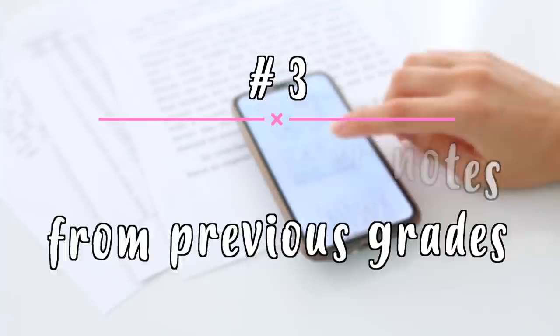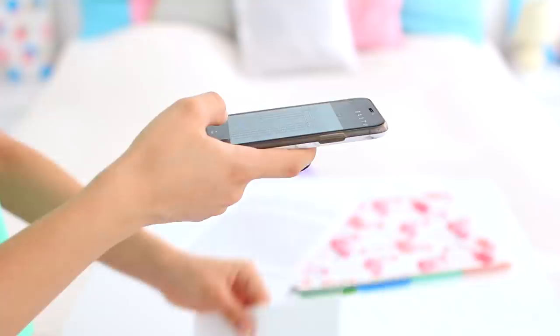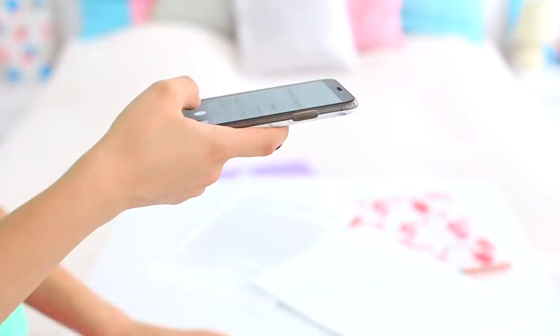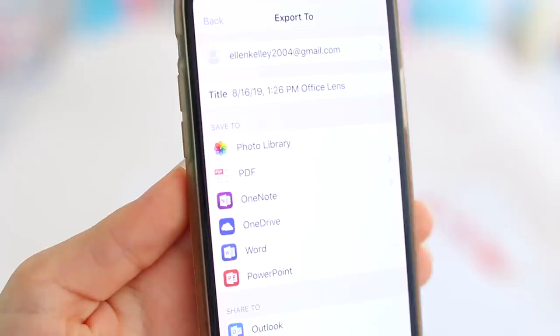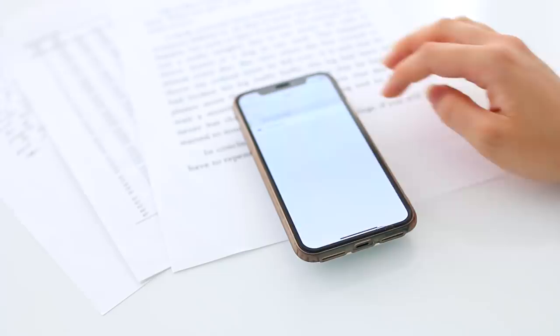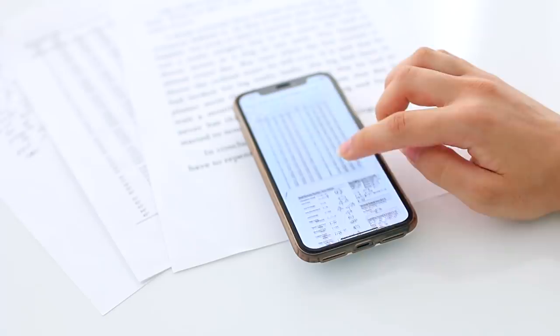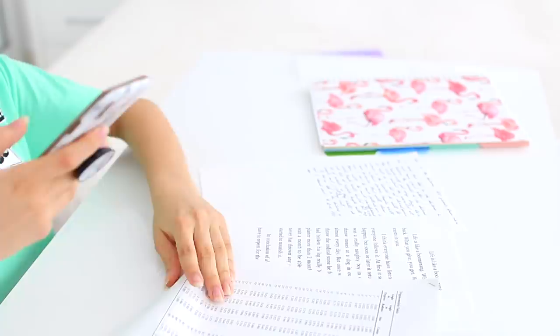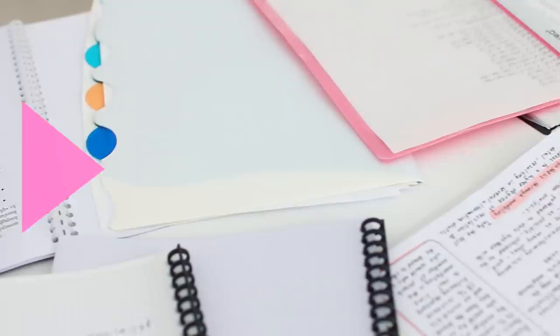The next tip that I have is to digitalize your notes, especially notes from previous grades that you rarely ever use. They take a lot of space in your drawers and instead it's so much easier to scan them into a PDF document. It will be a lot more accessible since you'll be able to access it from different devices. PDF documents take pretty much no space on your phone or computer whereas all these notes and binders take a lot of space in your drawers.